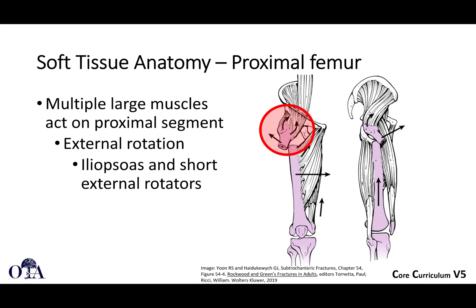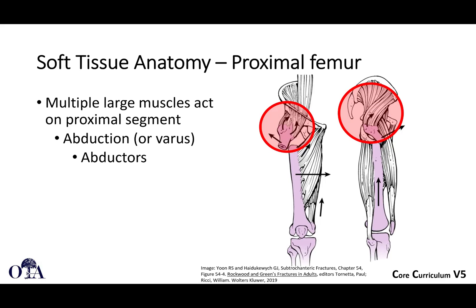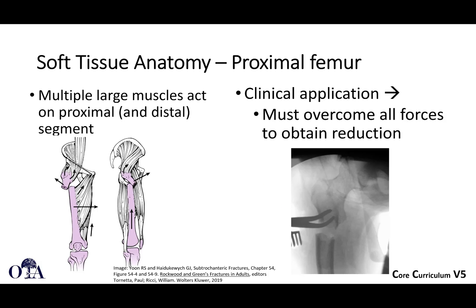Multiple large muscles act on the proximal segment, creating external rotation, flexion, and abduction. The iliopsoas and short external rotators create flexion primarily, with a little contribution from the abductors. Abduction from the abductor muscles on the proximal fragment leads to varus. Distally, the main deforming force on the distal fragment is from the adductors, leading to shortening and medial translation. So you have deforming forces causing flexion, abduction, and external rotation of the proximal fragment, and adduction of the distal fragment.